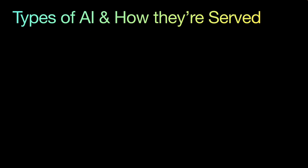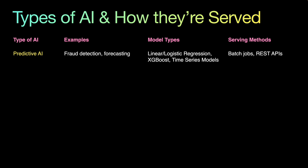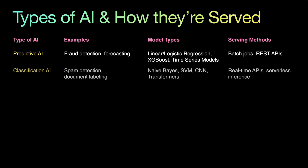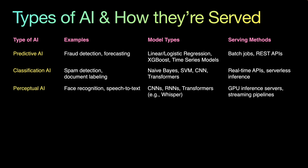Now let's talk about the types of AI and how they are served. The first is predictive AI — the most common and beginner-friendly type — which helps predict things like whether a transaction is fraud or what sales will be next month. These models often run as APIs or reports. Then there is classification AI, where the AI acts like a decision maker: is this email spam? Is this image a dog or a cat? We give it labeled data and it learns to sort things into categories.